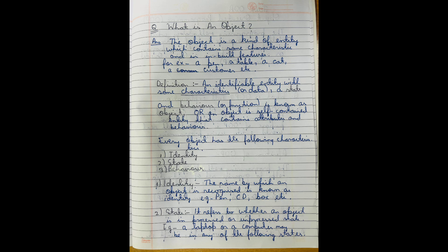The object may be at a particular time in on state, and at another time in off state or out of order state. The bike's state refers to whether the bike is running or stopped. The behavior of the bike includes how to start it and how to change the gear.